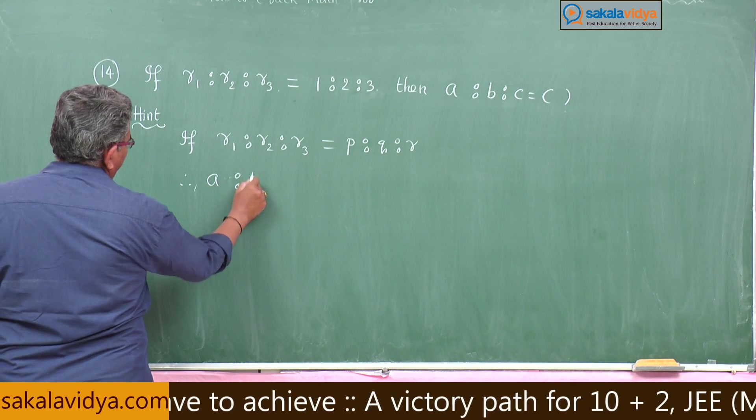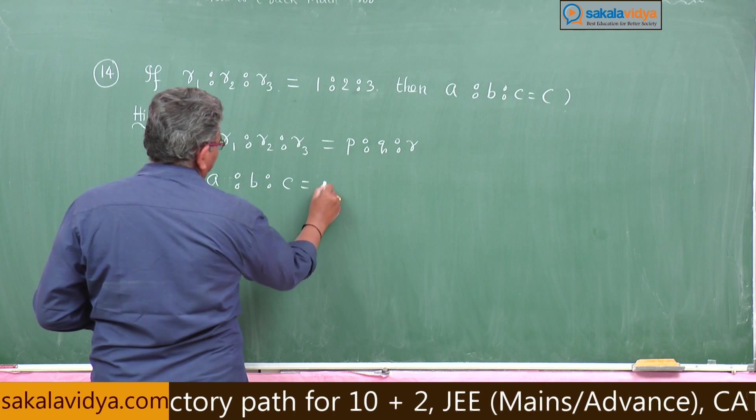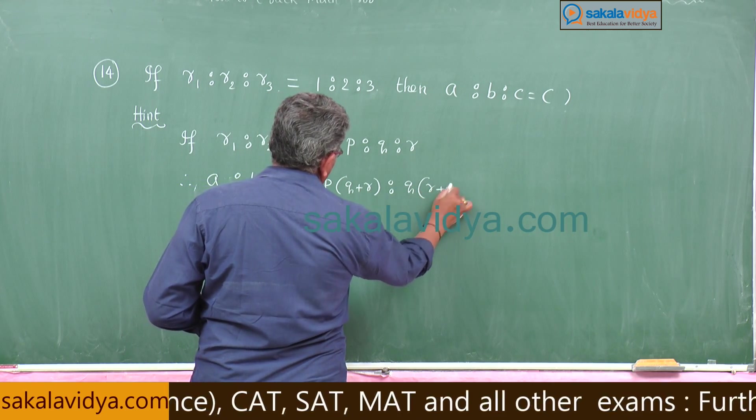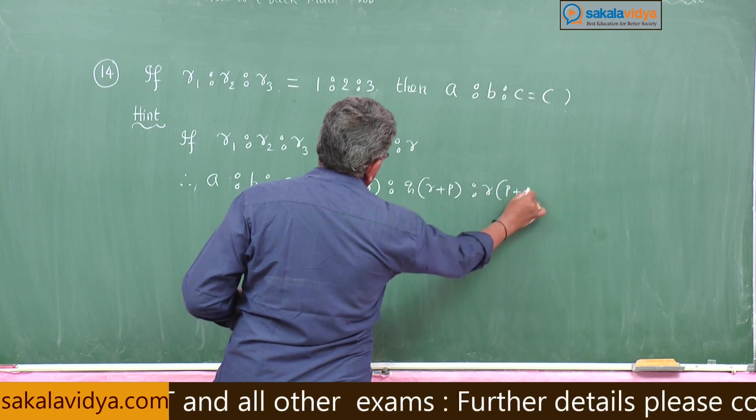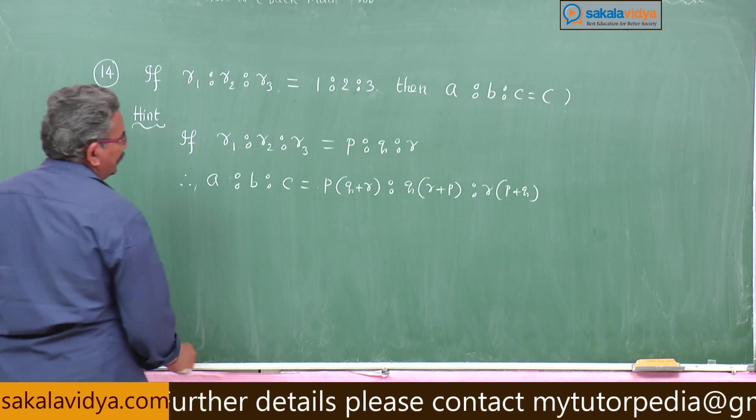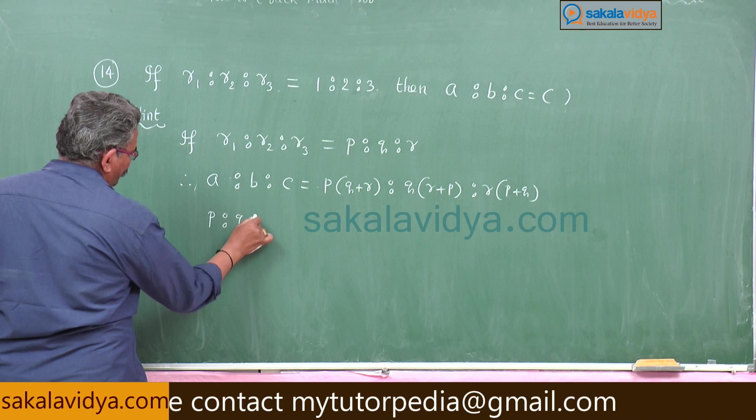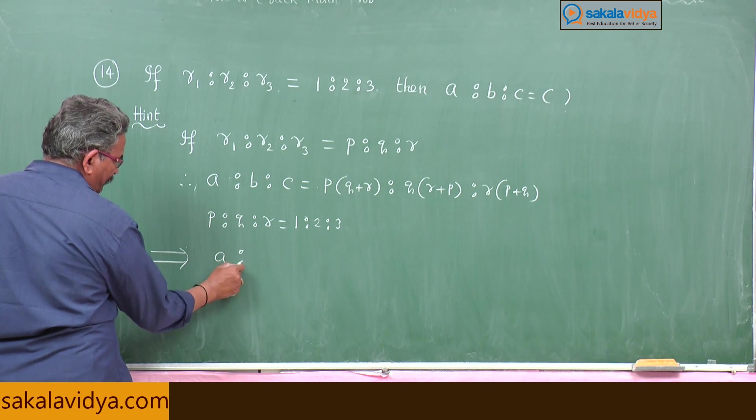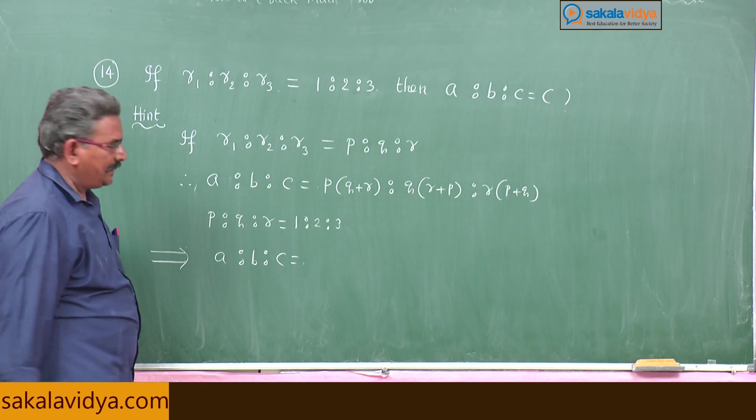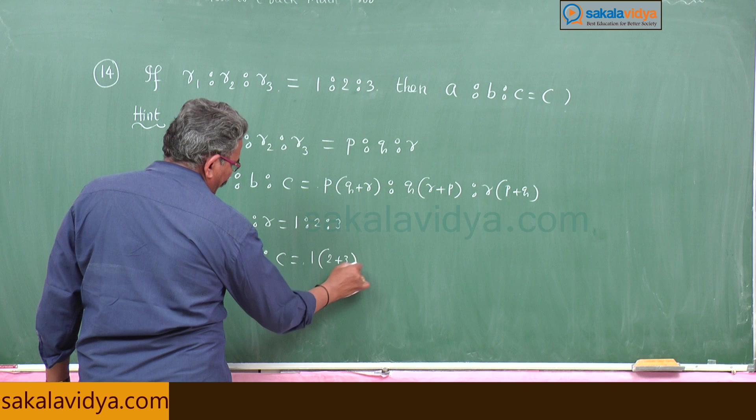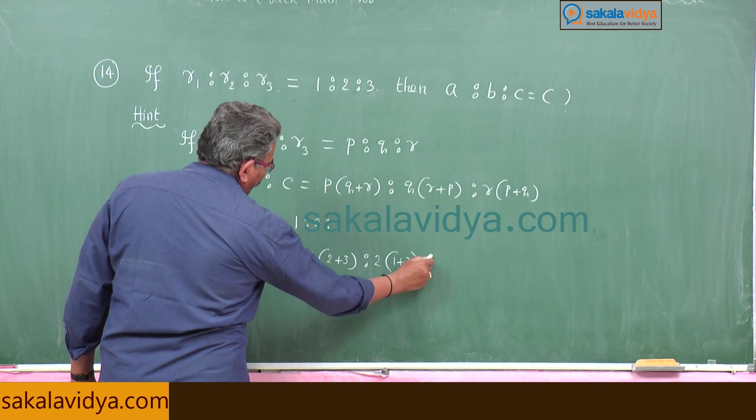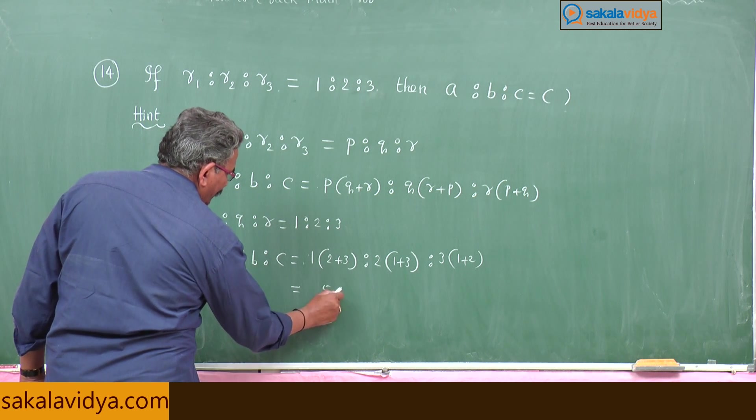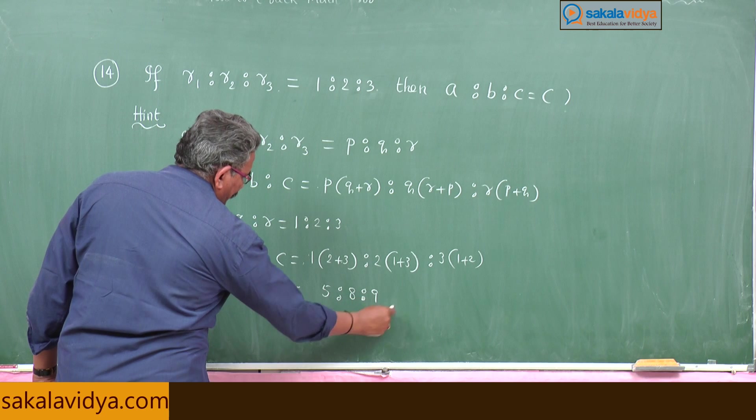What is given here? p is 1, q is 2, r is equal to 3. Therefore, that implies a:b:c is equal to p(q+r), 1 × (2+3) : 2 × (1+3) : 3 × (1+2). This is equal to 5:8:9. This is the right answer.